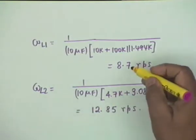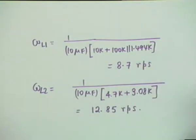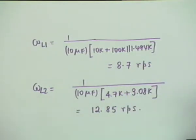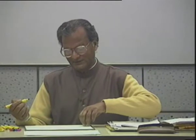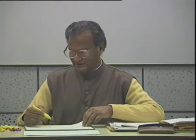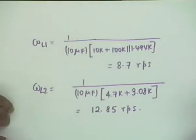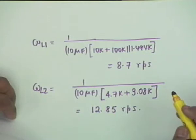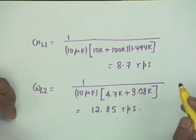C1 and C2 are decoupled, therefore the critical frequencies due to C1 and C2 can be calculated from this circuit. Omega_L1 due to C1 equals 1/(10 microfarad × (10K + 100K parallel 1.494K)), which calculates out to 8.7 rad/s. Omega_L2, due to the second capacitor, comes out as 1/(10 microfarad × (4.7K + 3.08K)) = 12.85 rad/s.